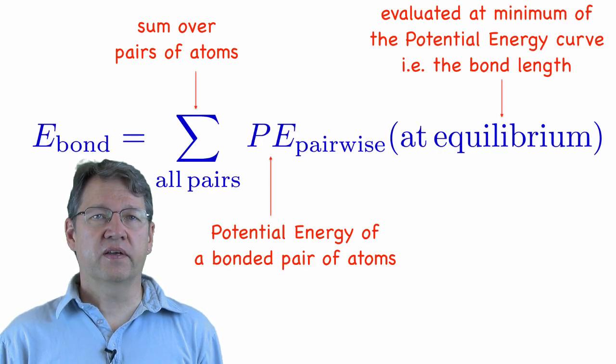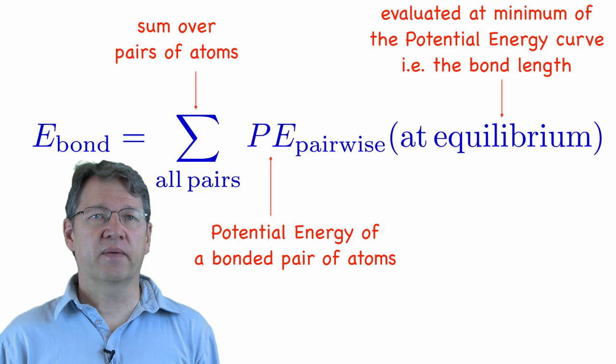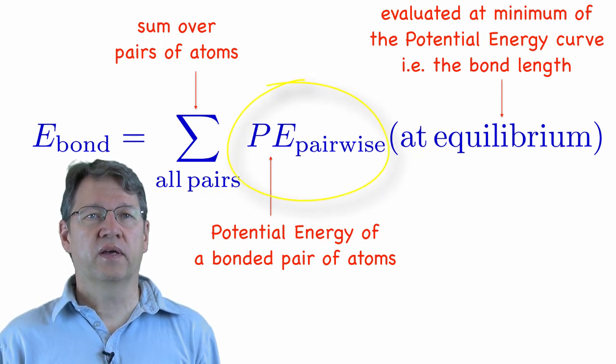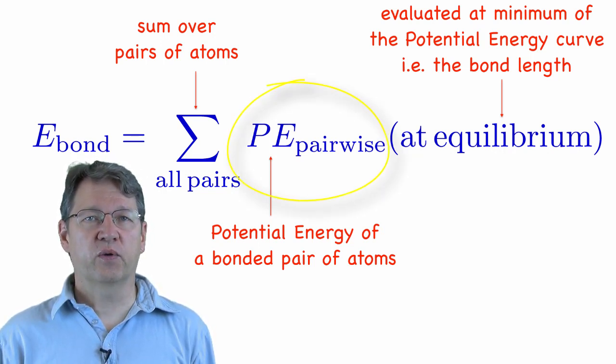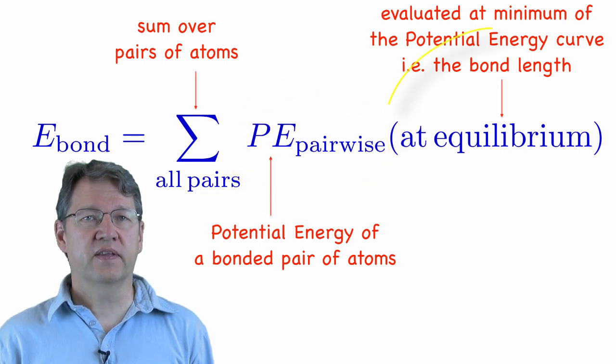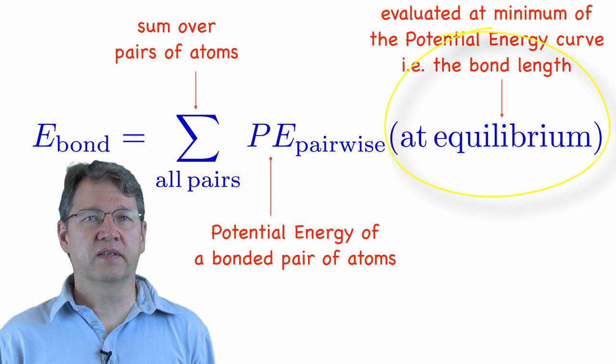First, to calculate the bond energy of some group of atoms, we need to add up all the potential energies for each bonded pair of atoms. For each pair, we have to find the value of the potential energy at the distance that the atoms are actually separated by, that is, the bond length.